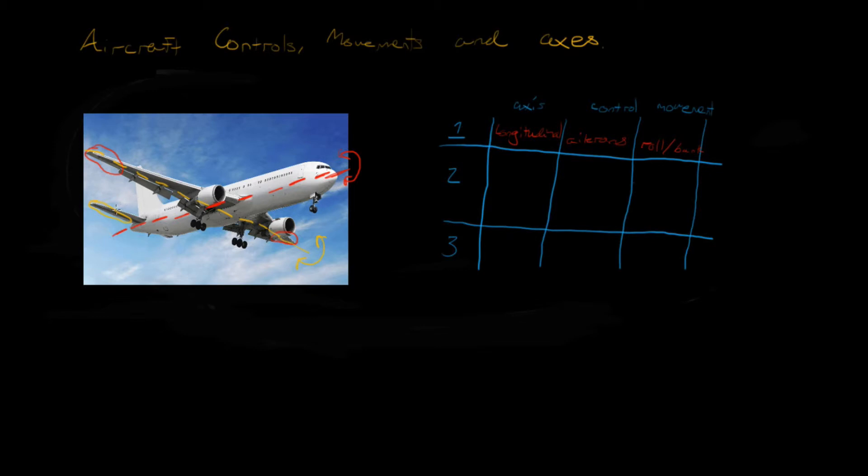The lateral axis is connected to the elevator, which controls a movement called pitch. So let's write all that down. You have your lateral axis, the elevator controls around the lateral axis, and the movement is called pitch.